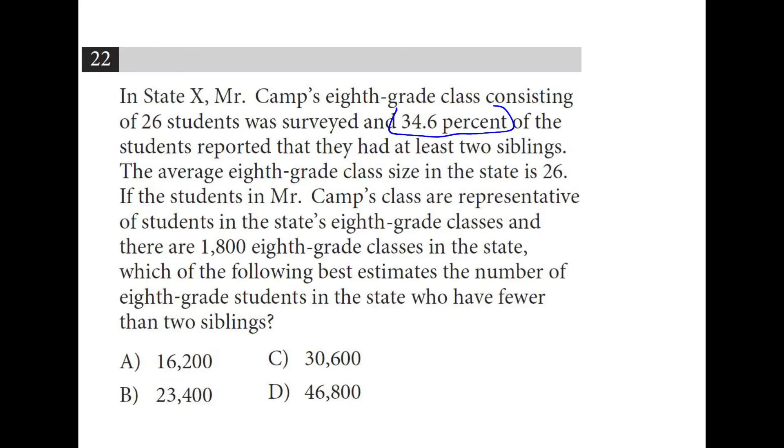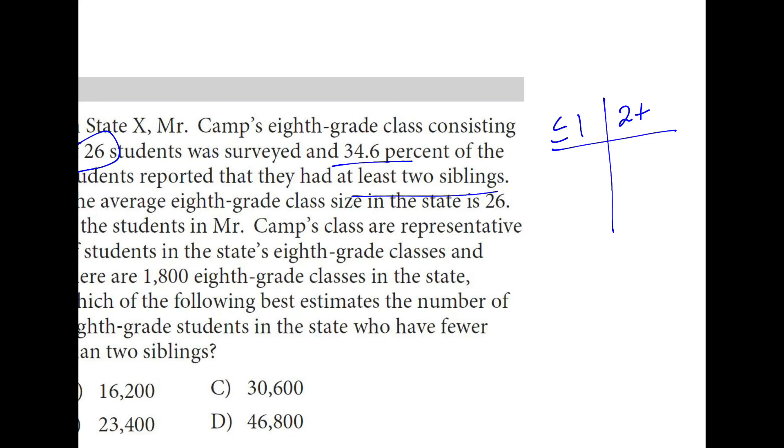So 34.6% of the students in this class reported they had at least two siblings. If they're representative of the entire state, you can just take 34.6% of the entire state. And what that tells you, so out of these 26 students, if 34.6% of them have at least two siblings, that means that nine have two or more siblings. And out of the 26, 17 have one or fewer.